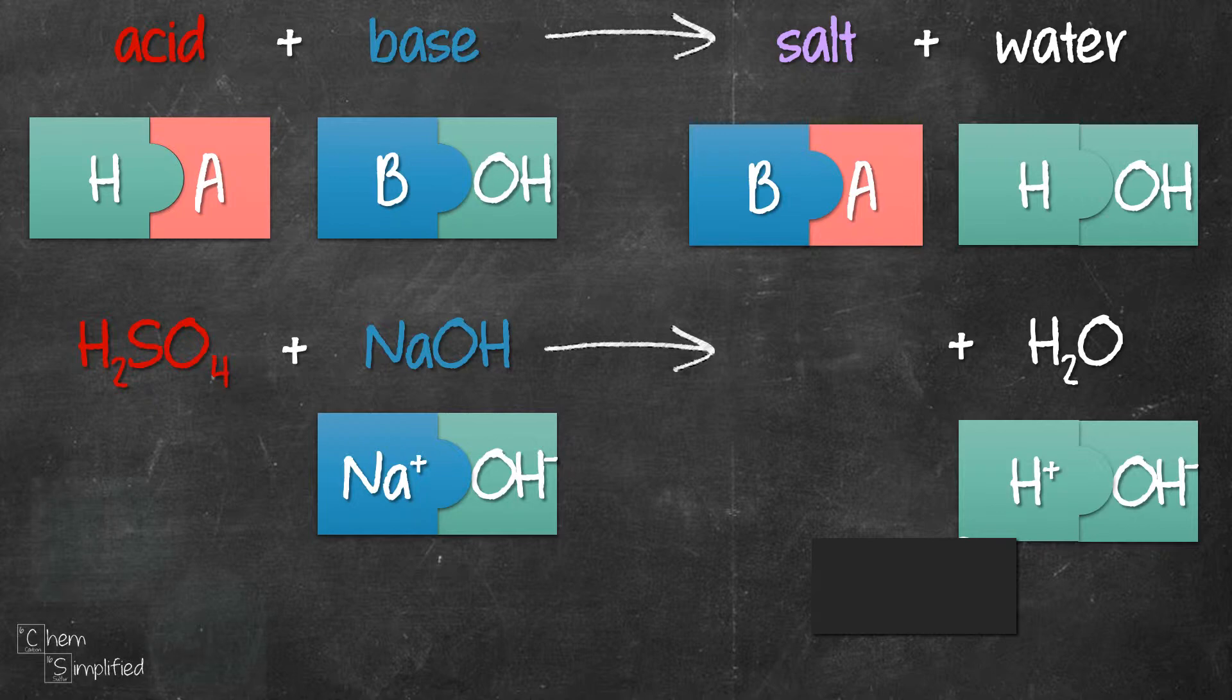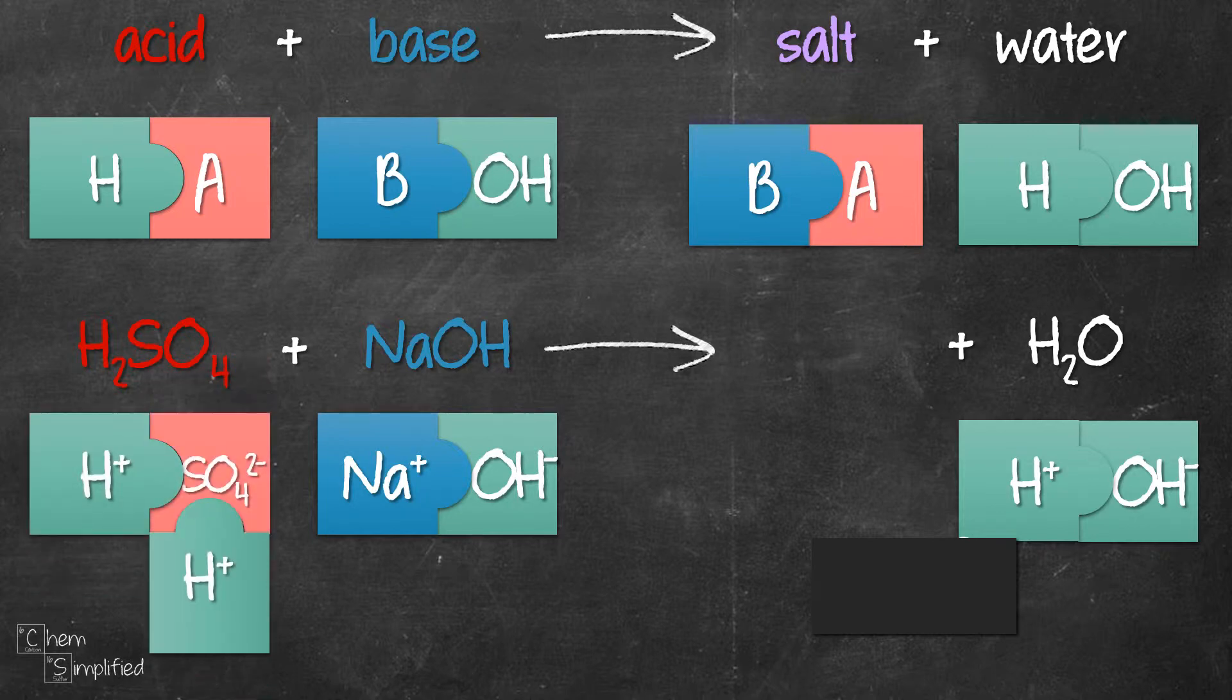And H2SO4 forms 2H+ and SO4²⁻ ions. We have 2H+ because there are 2 hydrogens in the sulfuric acid formula. Sulfate ion SO4²⁻ has a charge of negative 2. But let's just say we have no idea what the charge is, either it's not given to us or we have forgotten. How can we figure it out?